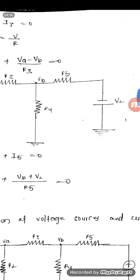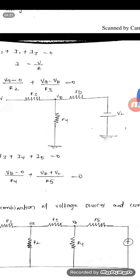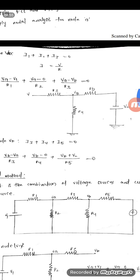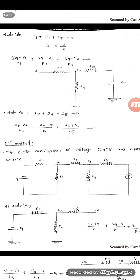I5 is equal to the potential difference between VB and V2 by R5. Here there is a minus of minus, so minus times minus becomes plus, giving (VB + V2) / R5 = 0. This is the nodal equation for node B — a very simple method for circuits consisting of only voltage sources.